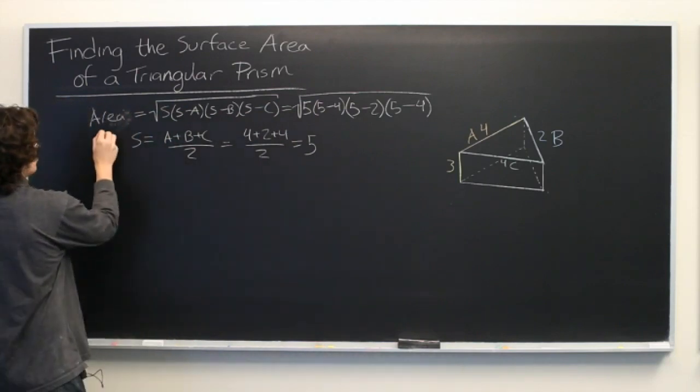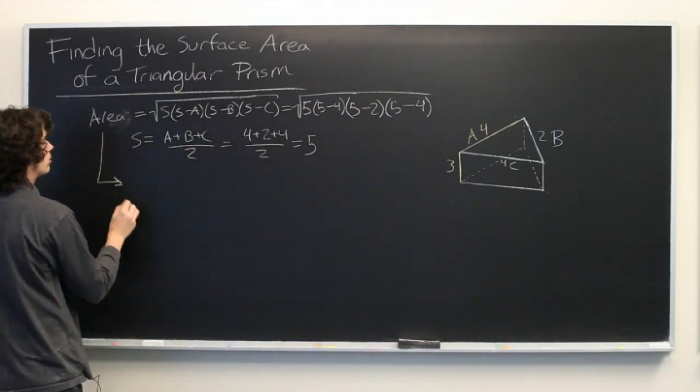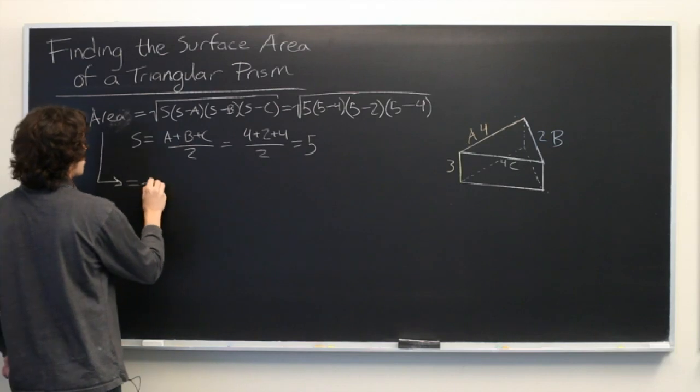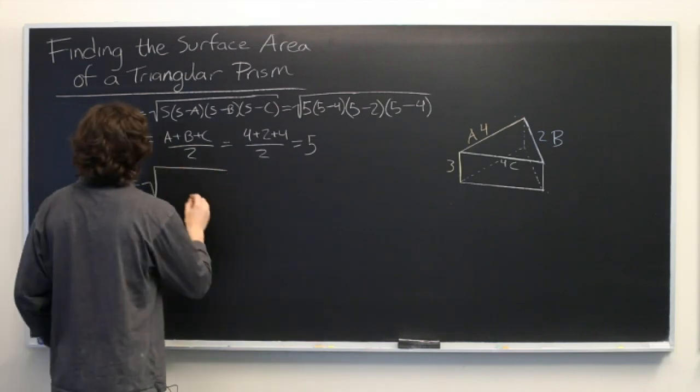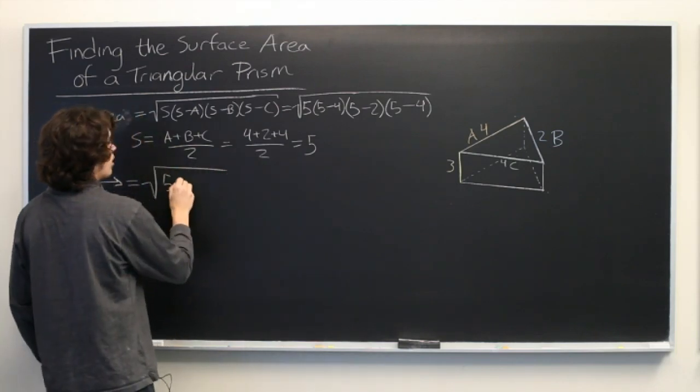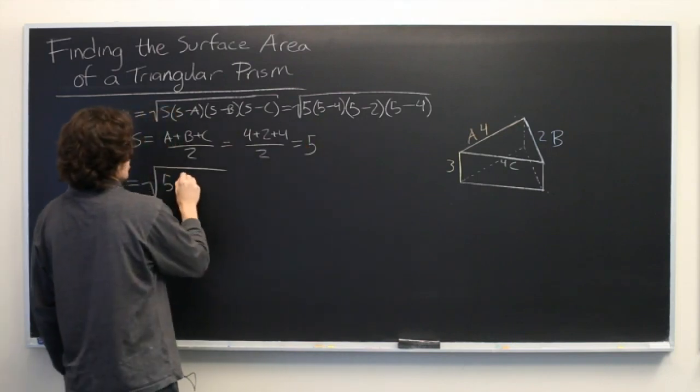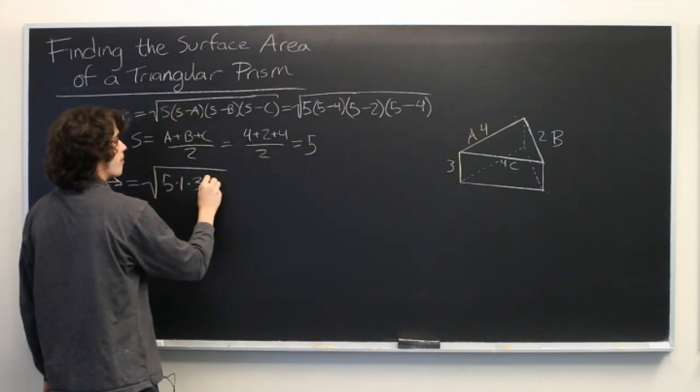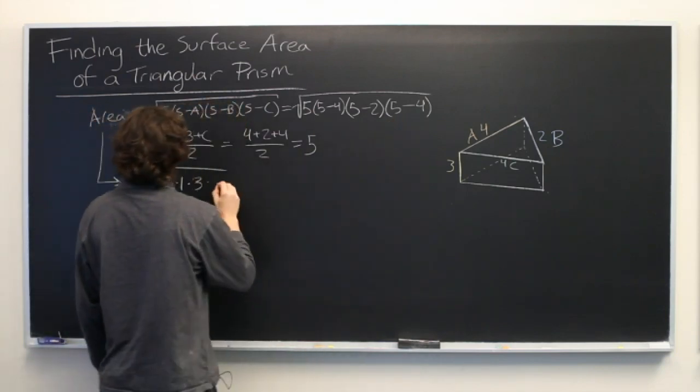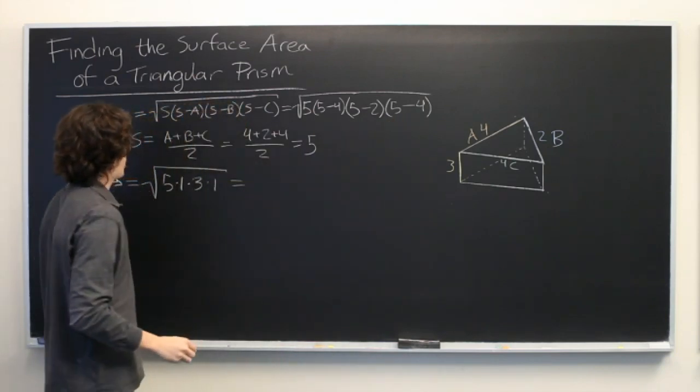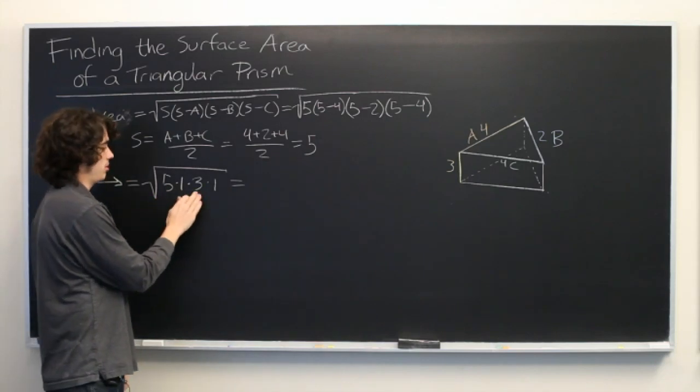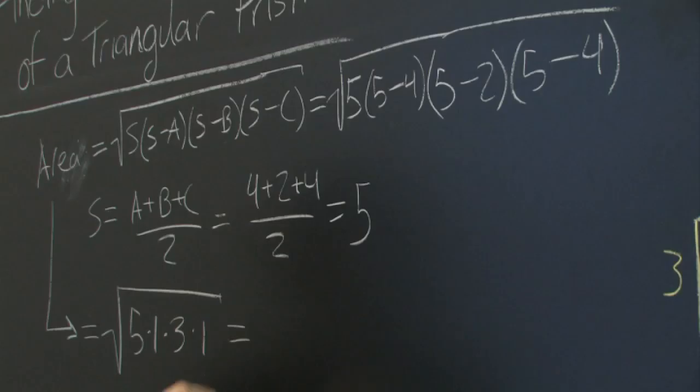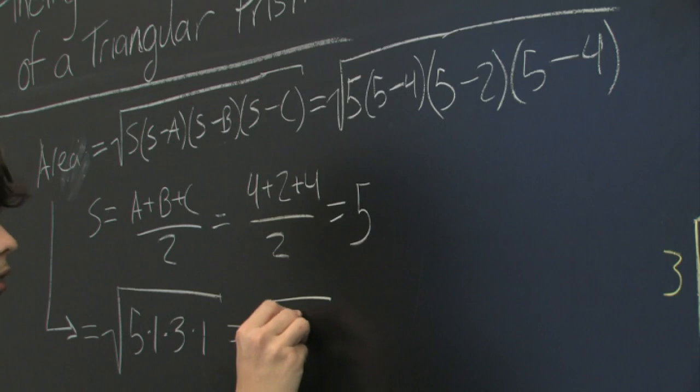Let's continue this computation down here. So 5 minus 4 is 1, 5 minus 2 is 3, and 5 minus 4 is 1 again. Multiply all this out. 5 times 1 times 3 times 1 is simply 15. We get the square root of 15, which does not reduce.